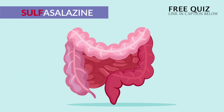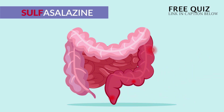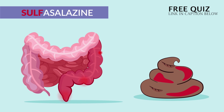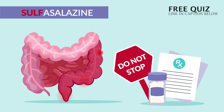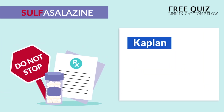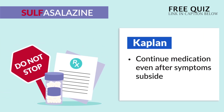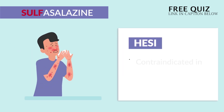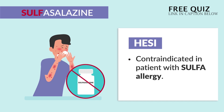Now don't let the NCLEX trick you. Some expected findings with ulcerative colitis: we get bloody diarrhea and inflammatory markers will be elevated. So don't stop the med — the med will actually help with this. Now according to Kaplan, this medication we continue even after symptoms subside. And on the HESI, it was contraindicated in patients with a sulfa allergy. Write that down — it's a sulfa drug.